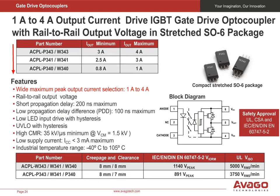Here we show our basic rail-to-rail isolated gate drivers that have driving current from 1 amp to 4 amps maximum, in the very small SS06 package. Rail-to-rail output voltage means the output voltage level is very close to the VCC supply voltage when fully turned on and very close to the VEE voltage after the IGBT is turned off. The propagation delay time TP and propagation delay difference between devices PDD are 200 nanoseconds and 100 nanoseconds respectively. These short times minimize dead time and improve efficiency. Other benefits include a high CMR of 35 kV per microsecond minimum, a common mode voltage of 1.5 kV, under-voltage lockout with hysteresis, low LED input current drive requirement with hysteresis, and an operating temperature range of minus 40 degrees C to 105 degrees C.